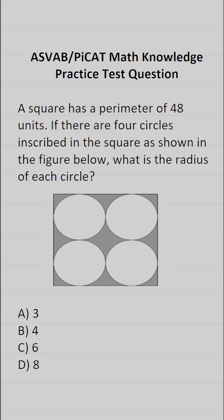So first, you have to know how to find the perimeter of a square. On the ASVAB and PyCat, you're not given a calculator or reference sheet, so you do have to commit these basic formulas to memory. The formula to find the perimeter of a square is P equals 4S, where S refers to the side length of the square.